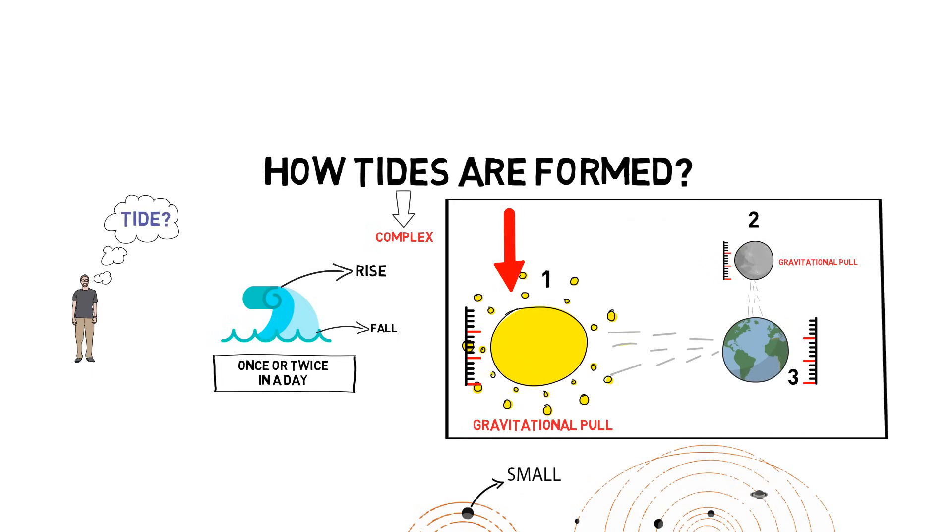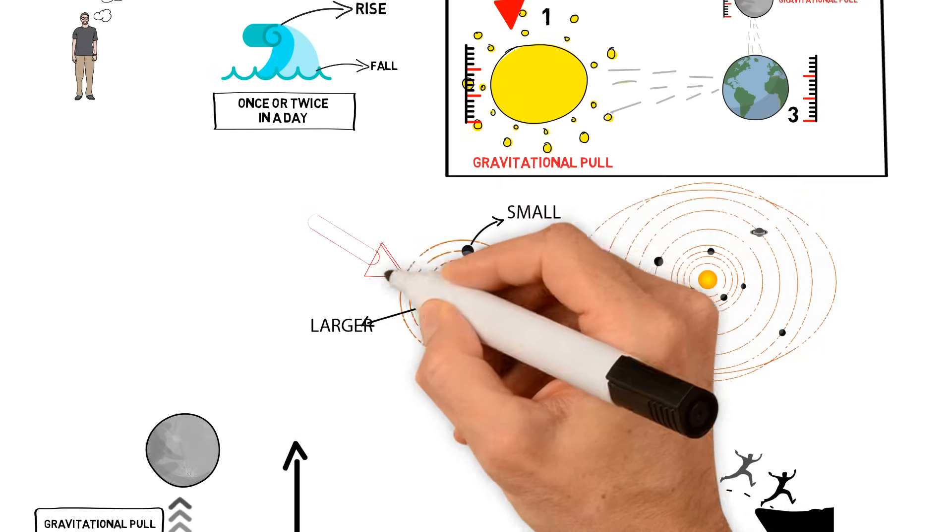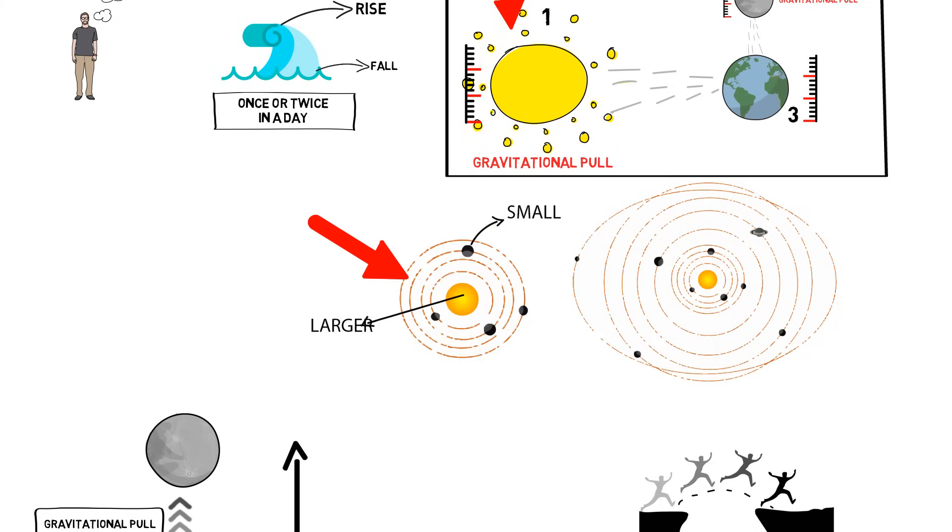As I said, the sun is bigger than all the celestial bodies in a solar system. That means the sun will exert more gravitational pull, and it has influences on the tides as well.